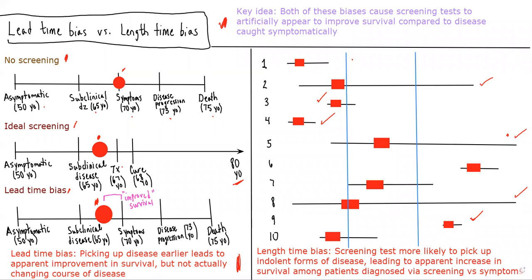So that's the difference between the lead time bias and the length time bias. I hope this helped to clarify these issues. As usual, I have a few practice questions after this which can allow you to apply these concepts and see whether you actually understand it or not. Please like, comment, subscribe, and good luck.